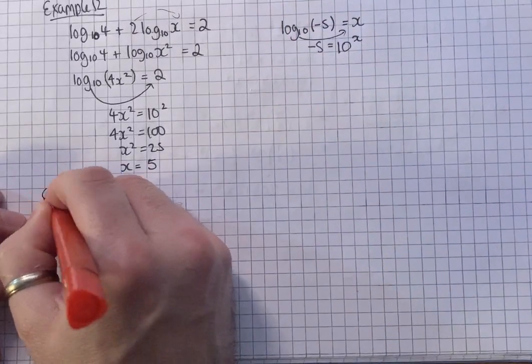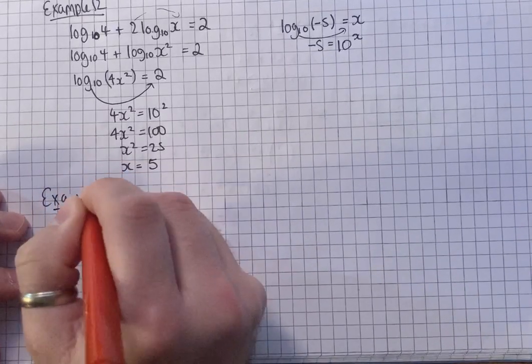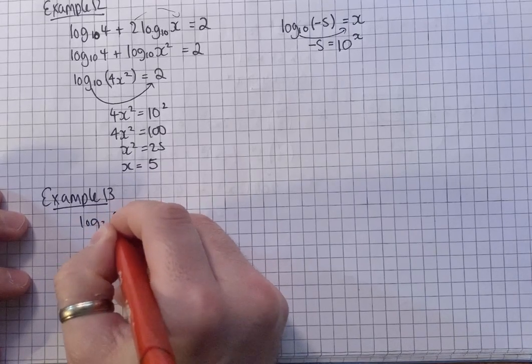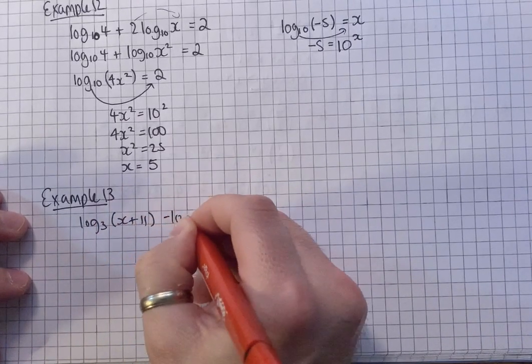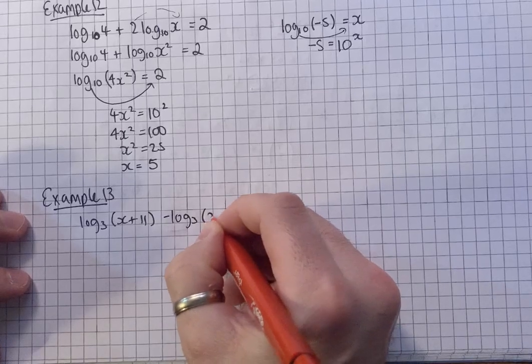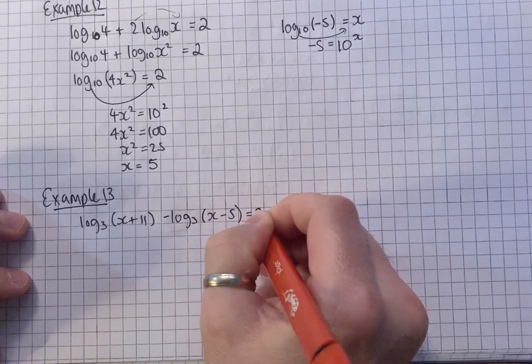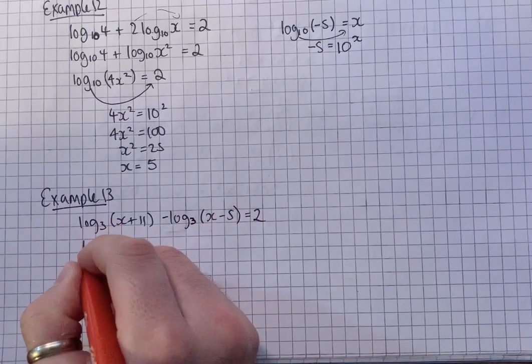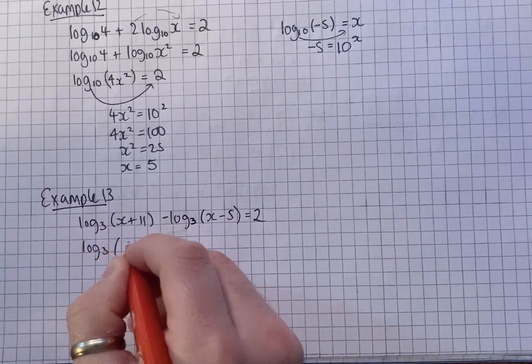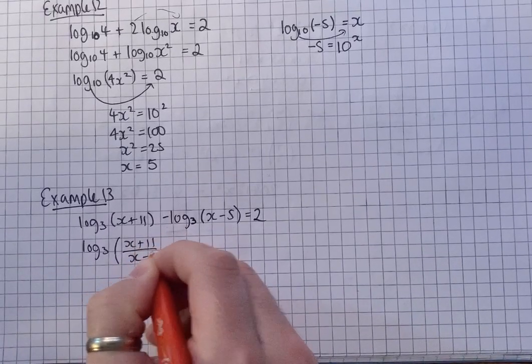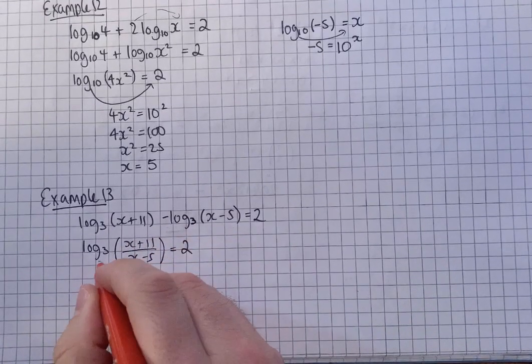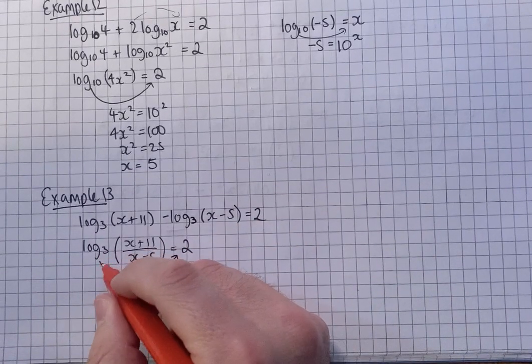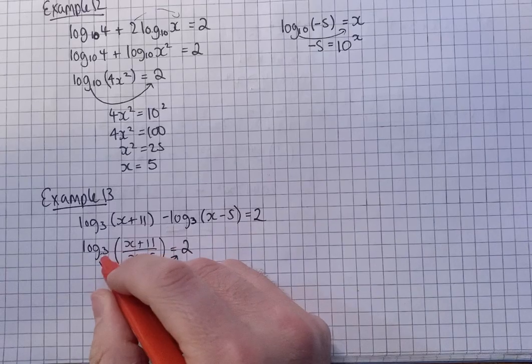Example 13. We've got log to the base 3 of x plus 11, minus log to the base 3 of x minus 5, equals 2. So they both start with log, so I can use the division rule straight away and create a single logarithm by dividing them. I can now bring this to the other side. Remember, it's not 2 cubed. Common error. Log to the base 3 becomes 3 to the power of. Remember, the base here, base here. So it's going to be 3 to the power of 2, which is 3 squared, which is 9.